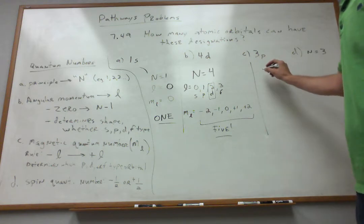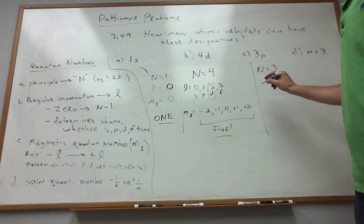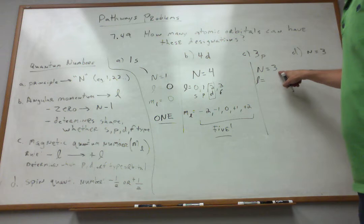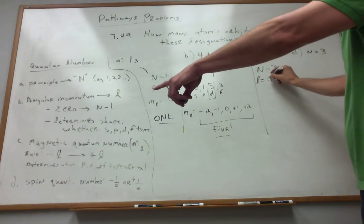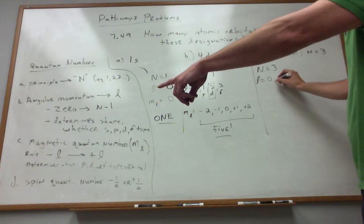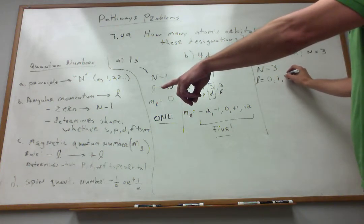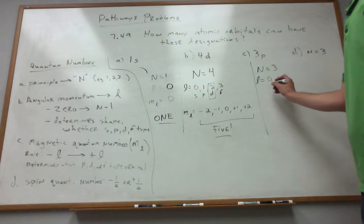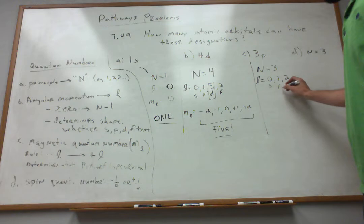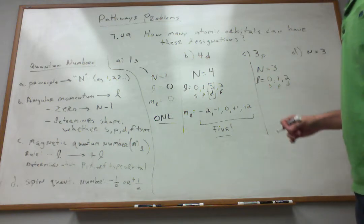All right, what about the 3p? Well, clearly, my primary number is 3. Let's think about what my l possibilities are. Well, if the primary is 3, again, I go from 0 to n minus 1. So 1, 2, all these are allowed. And earlier, we said that the 0 is the s, the 1 is the p-type, and the 2 is the d-type. So all these would be possible in the n equals 3 level.